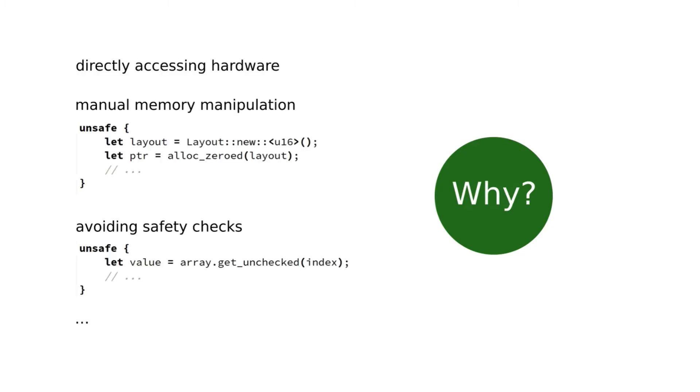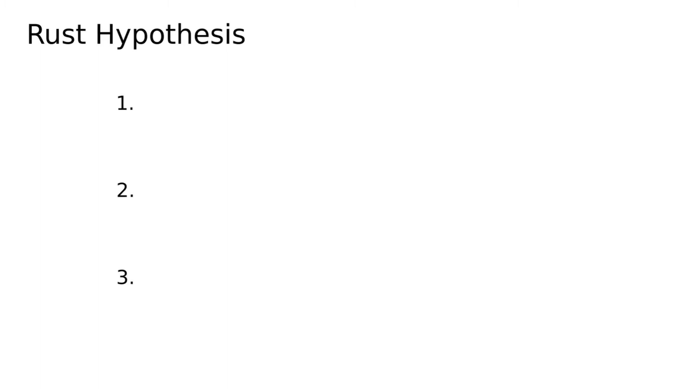In our paper, we have also explored why programmers use unsafe Rust. One example we already saw is using unsafe for directly accessing hardware. Other examples include manually manipulating memory and avoiding safety checks to speed up code. You can find more examples and detailed analysis in our paper. But now, let's go back to the how. After reviewing many official and unofficial sources on using unsafe Rust, we found that most of them agree on three principles that should help limit the dangers of unsafe code.